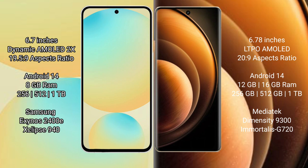Samsung Galaxy S24 FE comes with 8GB RAM and 128GB to 256GB or 512GB internal storage, powered by the Samsung Exynos 2400E processor. Vivo X100 comes with 12GB or 16GB RAM and 256GB, 512GB, or 1TB internal storage, powered by the MediaTek Dimensity 9300 processor with GPU G720.